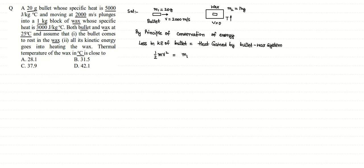The heat gained by the system is m1 s1 ΔT plus m2 s2 ΔT. In general, heat gained or lost by a body is given as m into s into ΔT. For heat lost we use a minus sign, and for heat gained a plus sign. Since the system has gained heat, we use plus for both. Taking ΔT common, we write this as (m1 s1 + m2 s2) into ΔT, where s1 and s2 are the specific heats of the bullet and wax respectively.